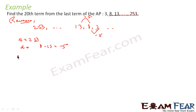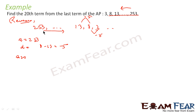Now I have to find a20. Because finding the 20th term from the last of the original AP is the same as finding the 20th term from the beginning when you reverse it. So I have to just find a20.